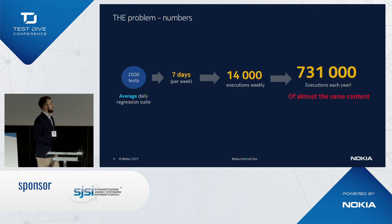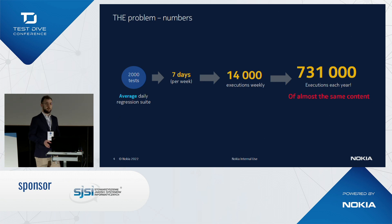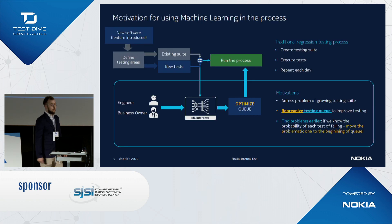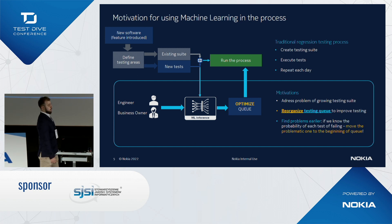700,000 executions represent 700,000 results of testing — logs, test statuses, and so on. That is a pretty substantial dataset to be used with machine learning algorithms. This is the scale that actually helps with automation from a machine learning perspective. By saying so, you already know what is the motivation behind using machine learning in this process.